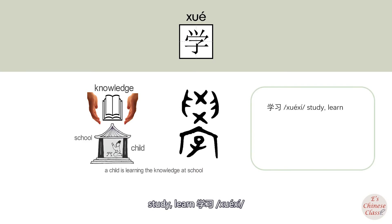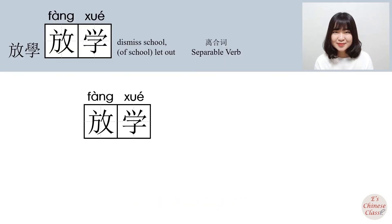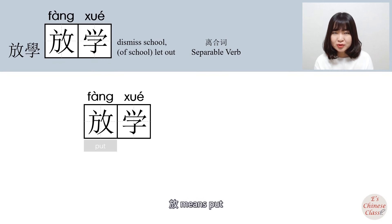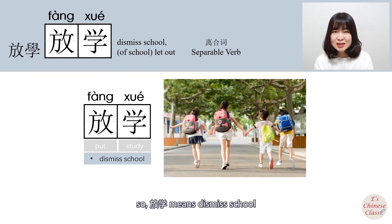學習. The extended meanings of 學 are school and college — 學校. So in the compound word 放學: 放 means put, 學 means study, and 放學 means dismiss school.